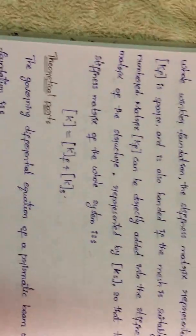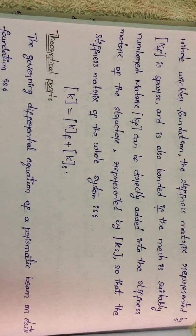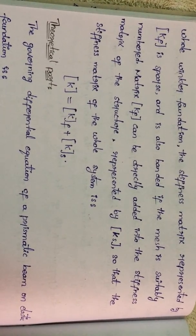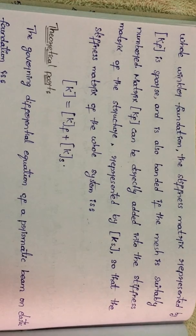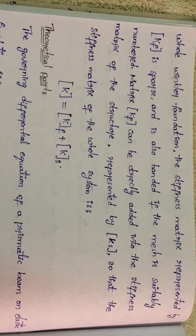The stiffness matrix represented by k f is sparse and also banded. The stiffness matrix k f can be directly identified into the stiffness matrix structure represented by k s.